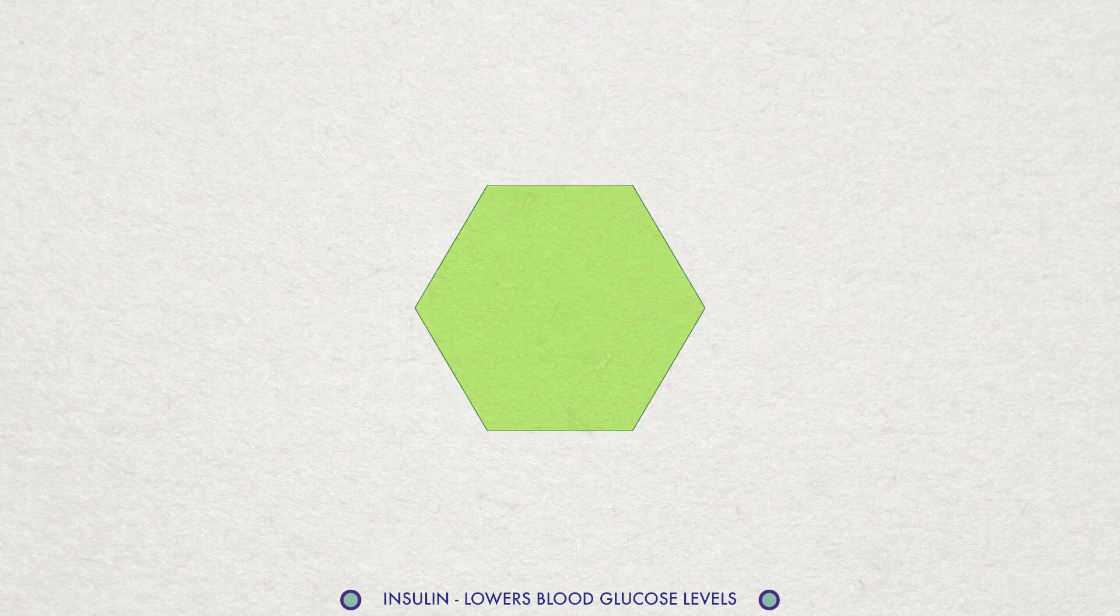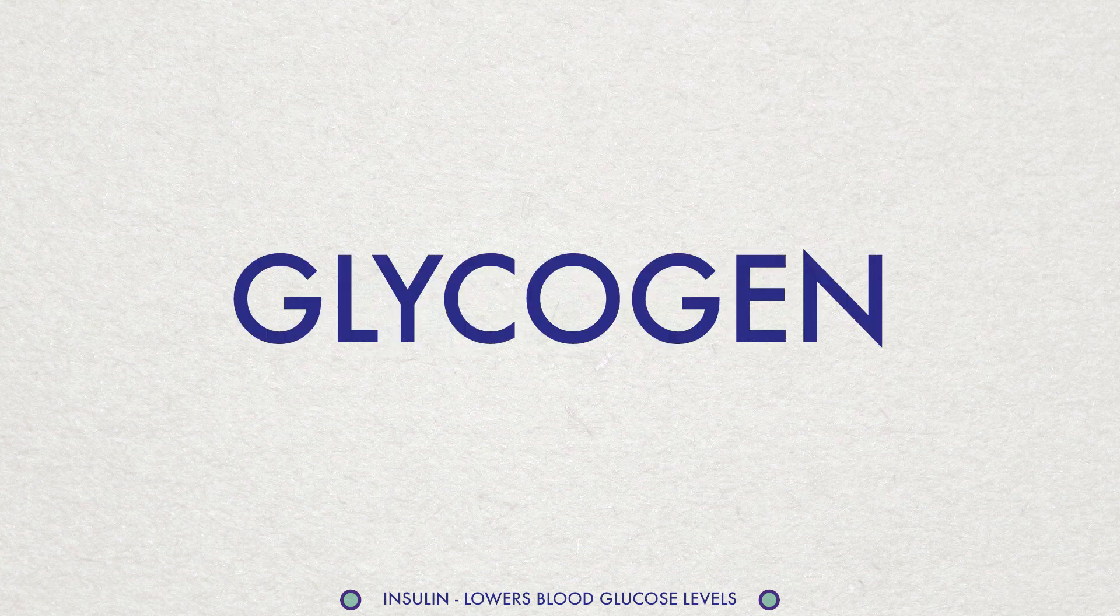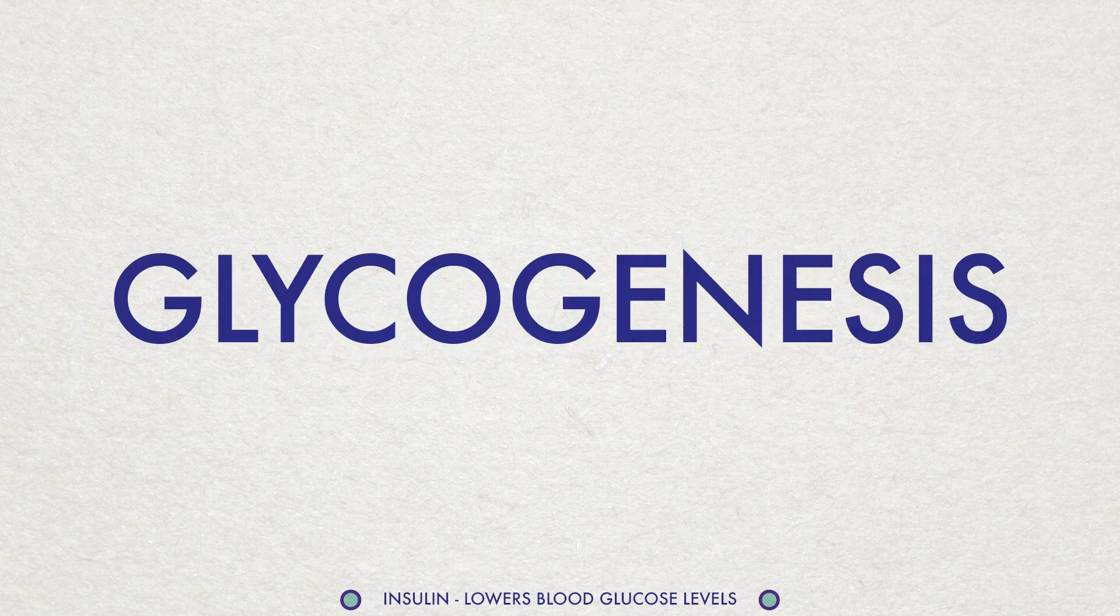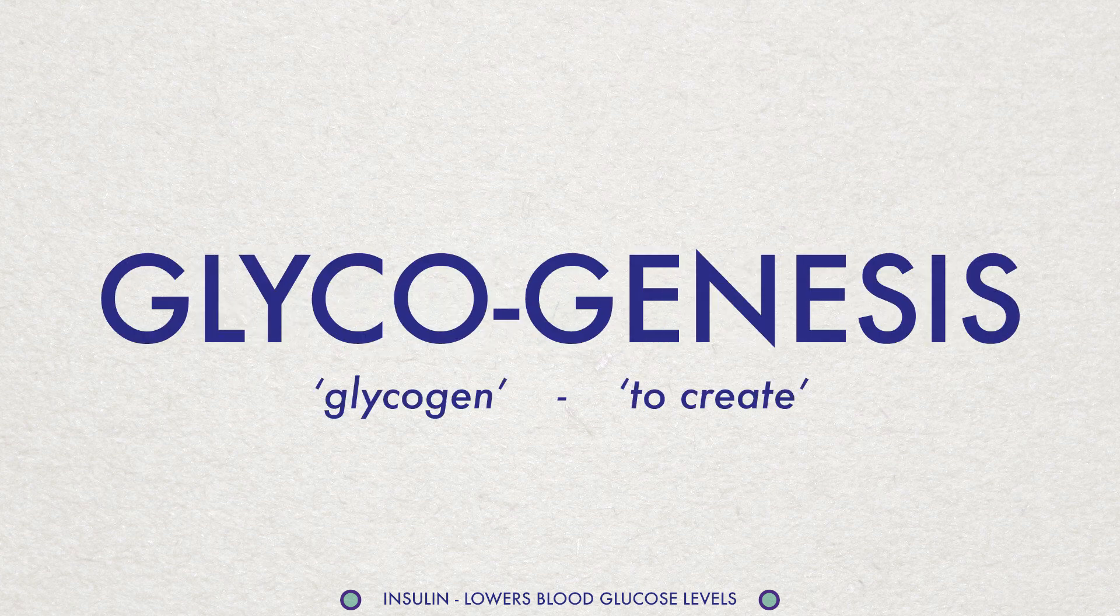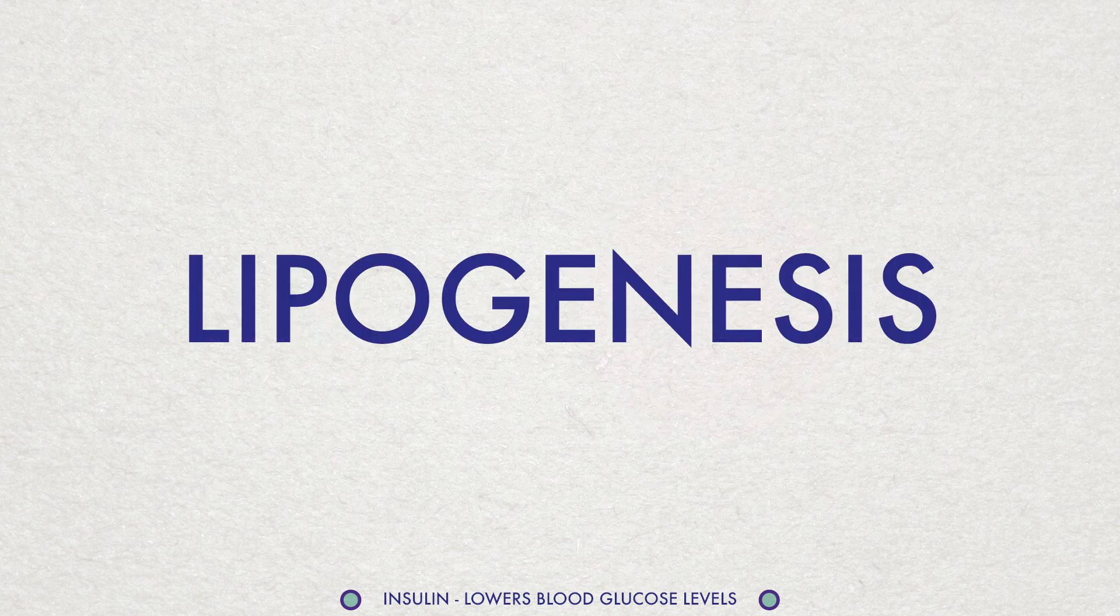Once glucose enters into a target cell, the following actions occur. Glucose is oxidized for ATP production. Glucose molecules are joined together to form glycogen. This is called glycogenesis. Glucose is converted into fat, especially in adipose tissue. This is called lipogenesis.